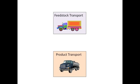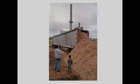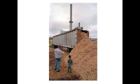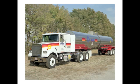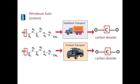Another carbon consumer often overlooked is the transportation system that moves raw materials and finished products. Harvested crops are transported from farms to the refinery, and ethanol is transported from the refinery to gas stations. Petroleum is normally used to fuel the vehicles in this system. When these vehicles burn fuel, carbon dioxide is released and returns to the atmosphere.